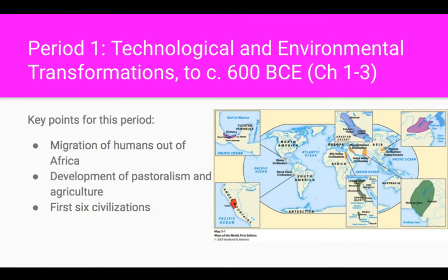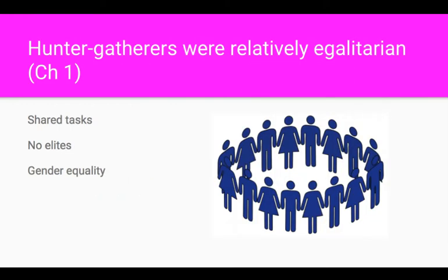Here's the review slide for the first unit. One thing to remember in the Paleolithic era is that hunter-gatherer societies were relatively egalitarian, meaning there was no social hierarchy and people had equal roles. The whole society was consumed with finding food, essentially, and this was seen as an equal task for everybody. Because there was no surplus of food or other important goods, there was never an elite class that formed.